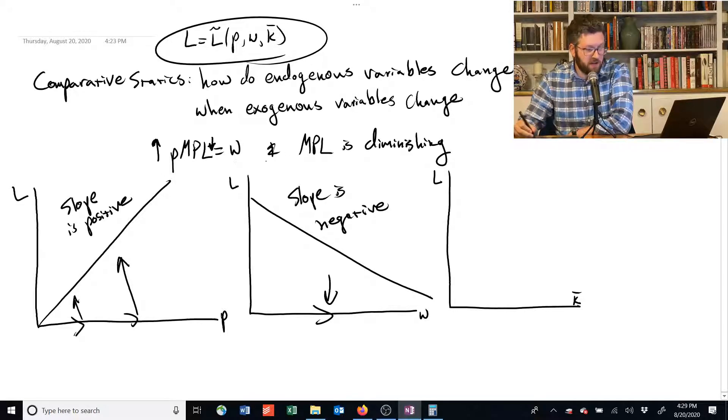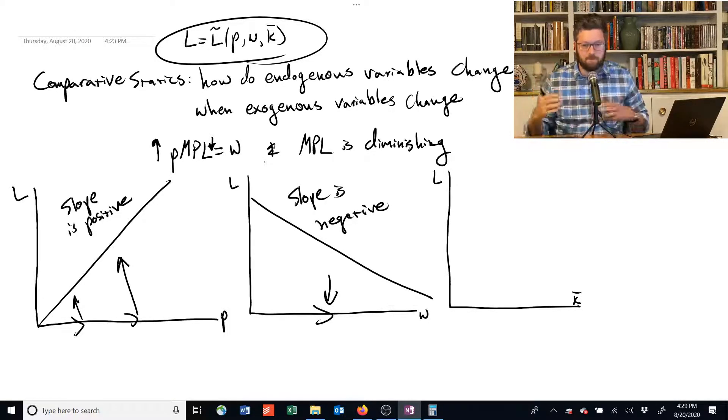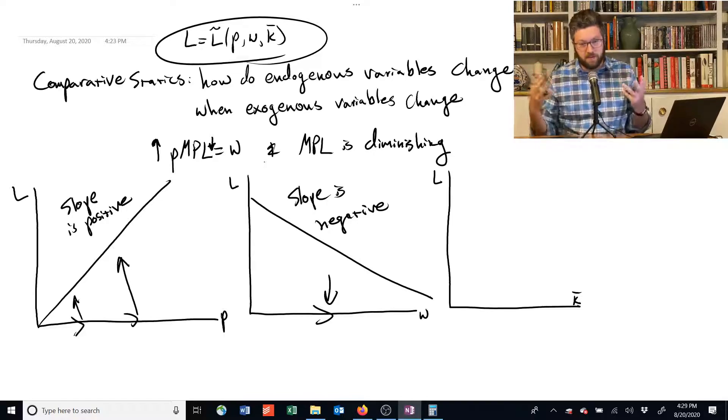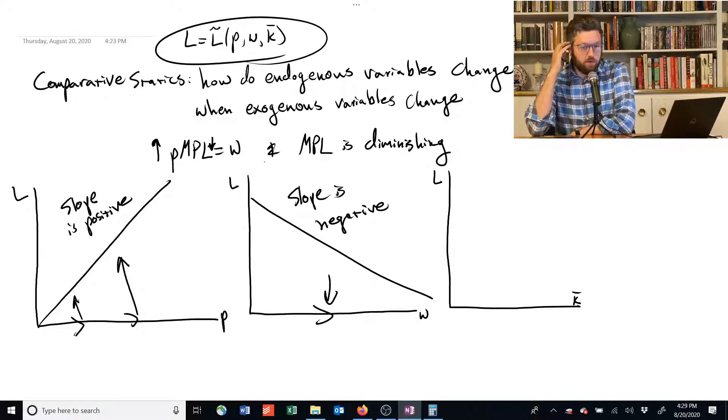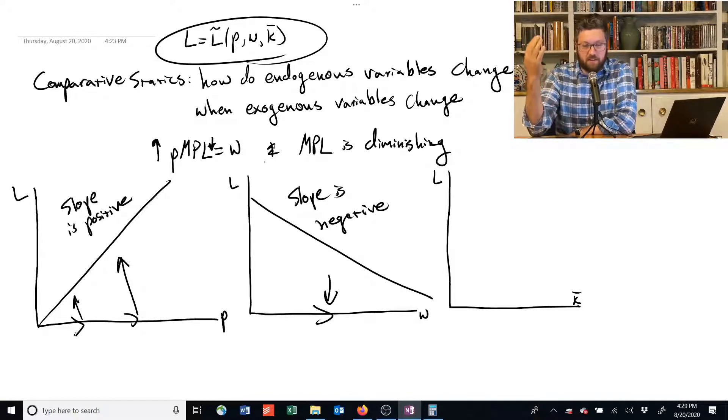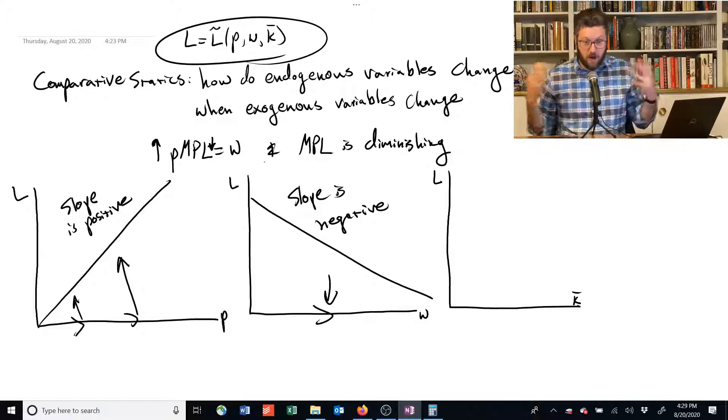Again, we've kind of uncovered an intuitively plausible story. If the output goes up... not if the output goes up, if the price of output goes up, you're going to demand more workers. So for example, if the price of, you know, if suddenly you're selling something that the price doubles, you want to capture some of that, you hire more workers to make it easier for you to get some of that profit.